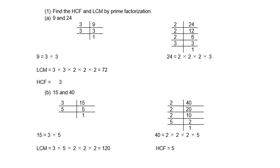Find the HCF and LCM by prime factorization for 9 and 24. Factors of 9: 3² . Factors of 24: 2³ × 3. For LCM, take the biggest of each: 3² and 2³, giving LCM = 72. For HCF, the common factor appearing in both is 3.